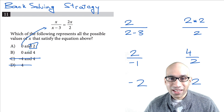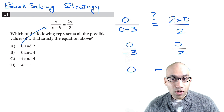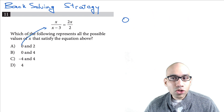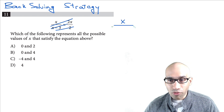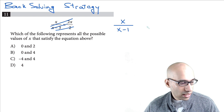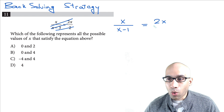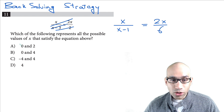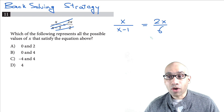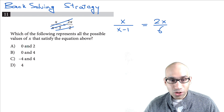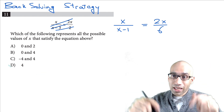Now try to solve a similar problem: x over (x − 1) equals 2x over 6. Try x = 0 first to see if it satisfies the equation, cancel it out, then find all solutions. It's one of the four answer choices, so post your answers in the comments below.